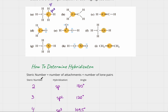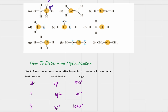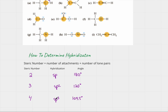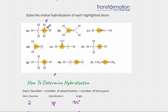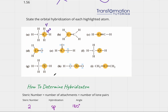This is something you can memorize: if the steric number is two, hybridization is sp; three is sp2; and four is sp3.